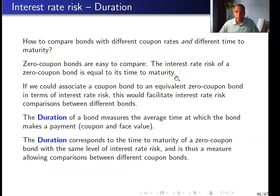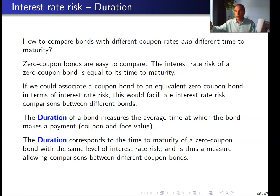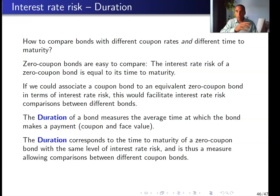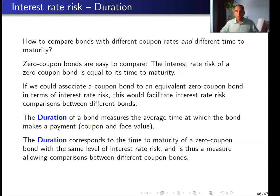There is a measure of interest rate sensitivity called duration. We know longer-term bonds are more sensitive to interest rates than shorter-term bonds, and when comparing two zero coupon bonds, the one with longer maturity is clearly more sensitive. If we can convert a coupon bond to its equivalent zero coupon bond in terms of interest rate sensitivity, this conversion — called duration — serves as a good measure that allows us to compare bonds with different characteristics. We don't calculate it in this course; we just introduce the concept.